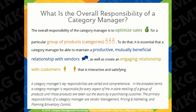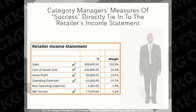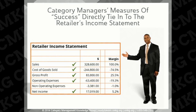Here's a description of what category managers, sometimes referred to as buyers, are responsible for. Their responsibilities are varied and comprehensive — they're responsible for every aspect of the in-store retailing of a group of products, or categories, until those products are taken out the doors by a purchasing customer. Based on their responsibilities, a category manager's measures of success directly tie into their retailer's income statement.